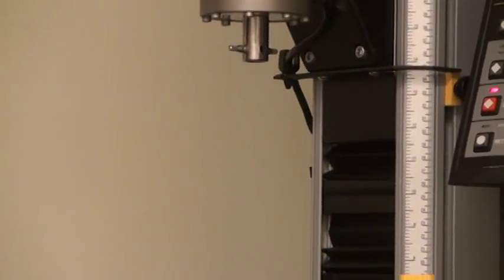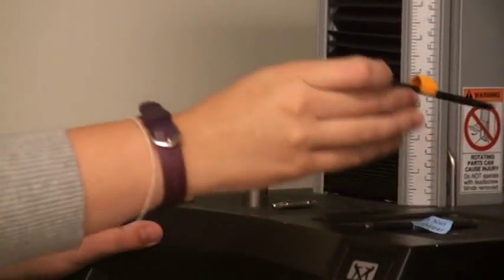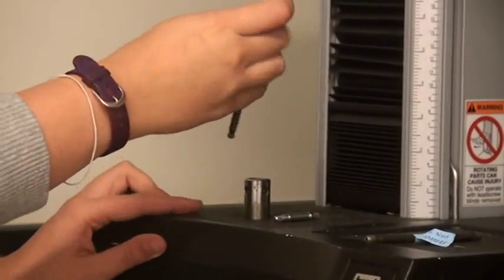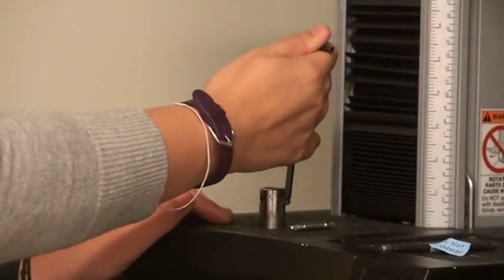You can remove the lower collet by removing the internal screw with a 3/16 inch hex wrench. Do not twist the collet itself or you will risk damage to the pins that hold it in place.